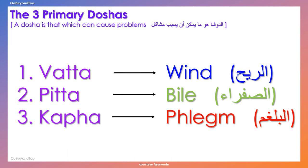A dosha is that which can cause problems in the human body. There are three primary doshas: vata, pitta, and kapha. Vata means wind in English. Pitta means bile in English. Kapha means phlegm in English.